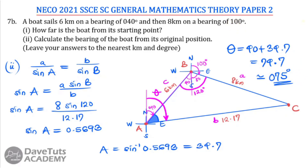In summary, we drew the diagram accurately, used the cosine rule to solve for the unknown distance, and used the sine rule to find the angle at A, giving us a final bearing of 075 degrees — solving both parts of the question on bearing and distance.